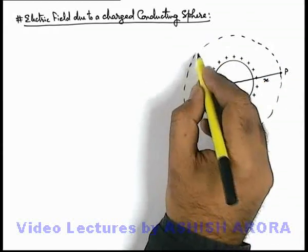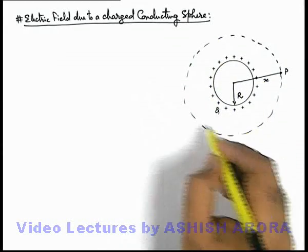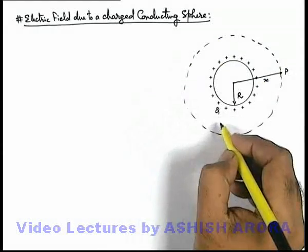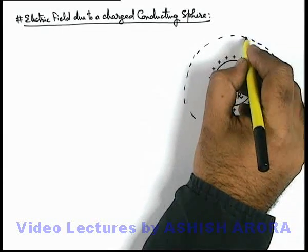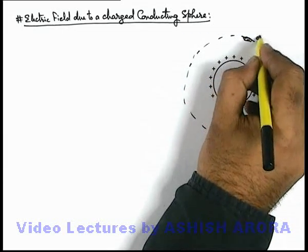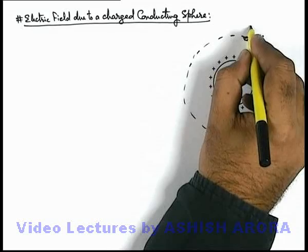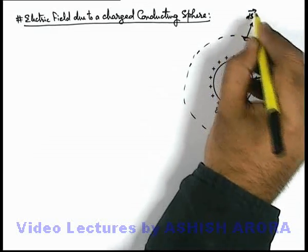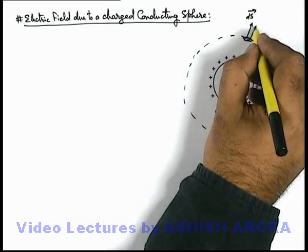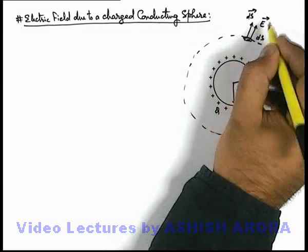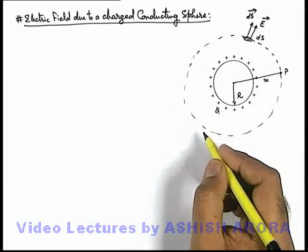this Gaussian surface will satisfy our condition that electric field will remain uniform and at every point. If we consider a small element ds, the area vector ds on the surface will be in radially outward direction as well as electric field will also exist in radially outward direction.